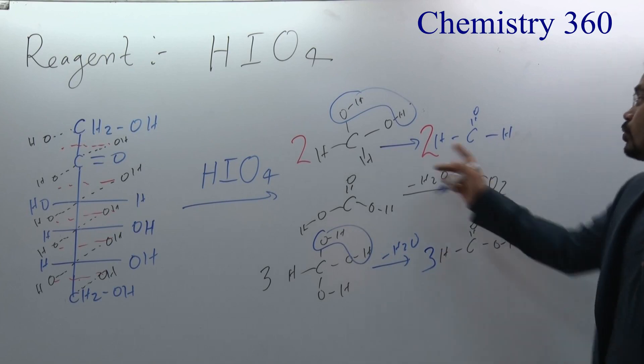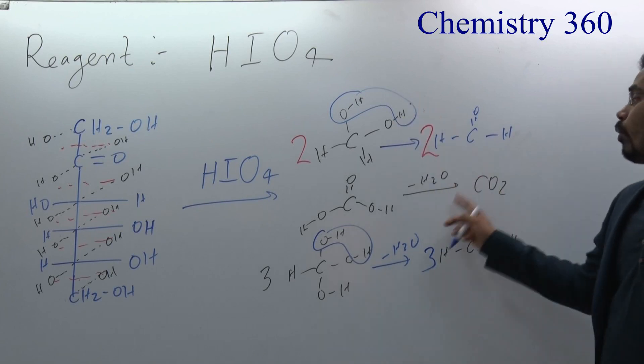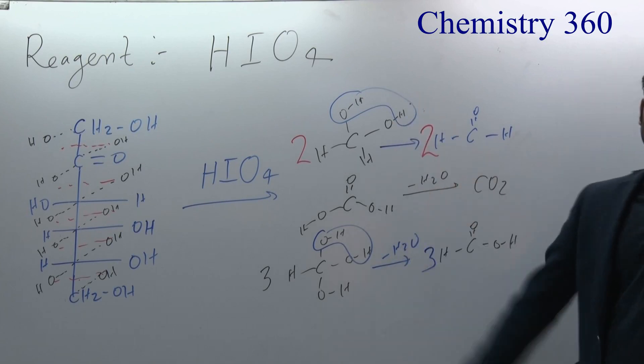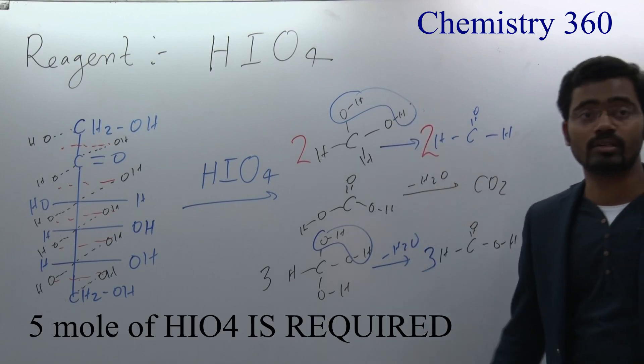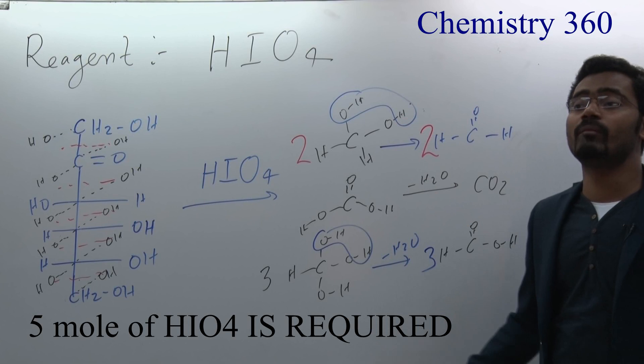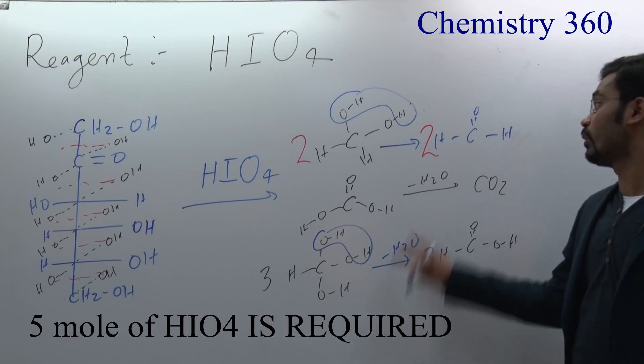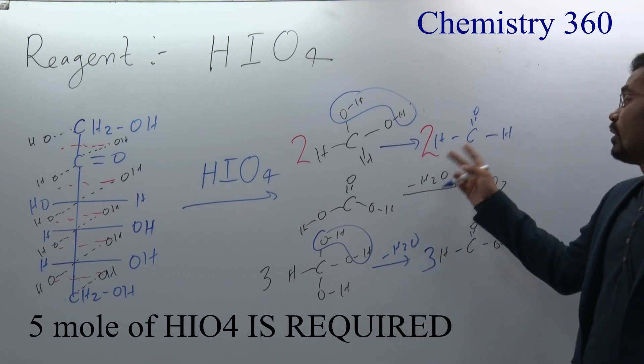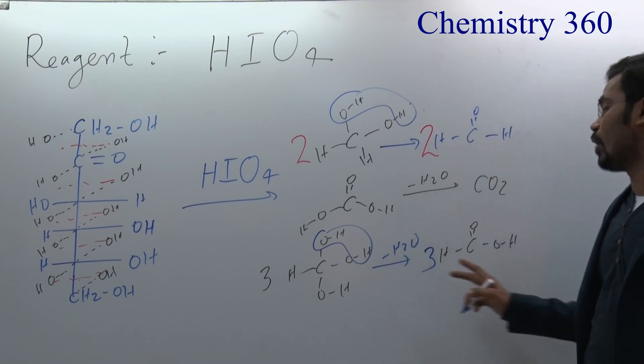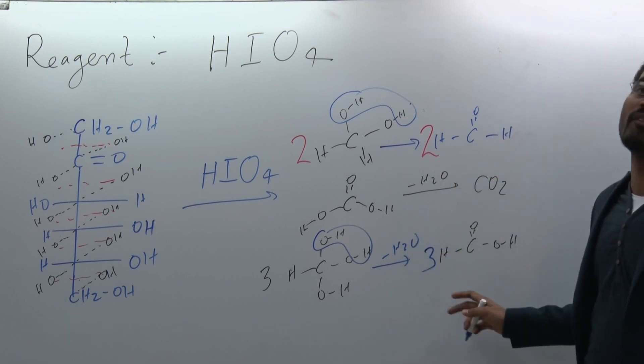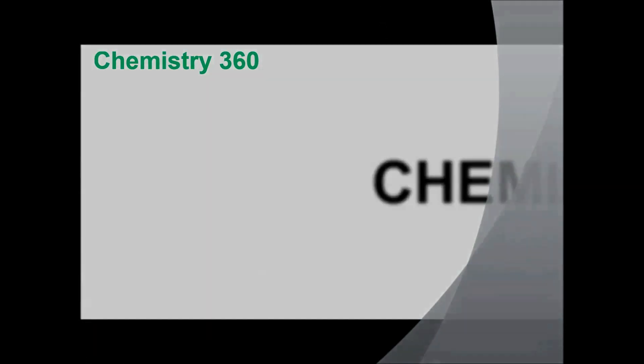So the product count is: 3 moles of formic acid, 2 moles of formaldehyde, and 1 mole of CO2 — three different types of products: formaldehyde, CO2, and formic acid.